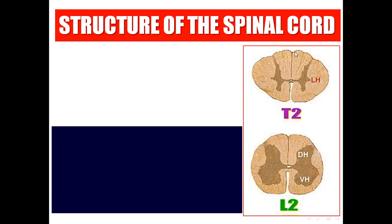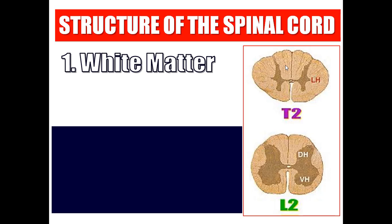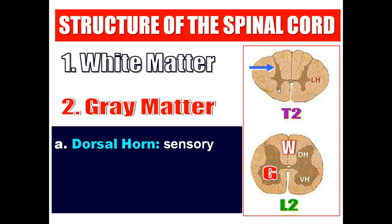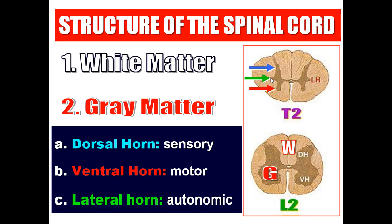A section of the spinal cord shows white matter and gray matter. The white matter is white because it is formed of myelinated axons. The gray matter is gray because it is formed of cell bodies. The gray matter is divided into three horns: the dorsal horn (sensory), the ventral horn (motor), and the lateral horn (autonomic), which is present only in the thoracic region and upper two lumbar segments.